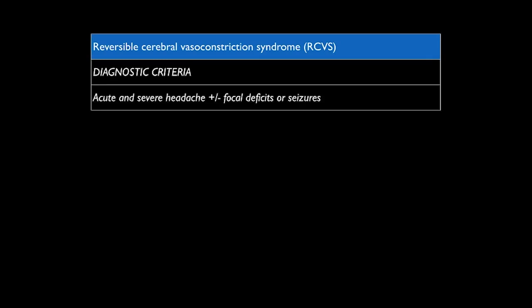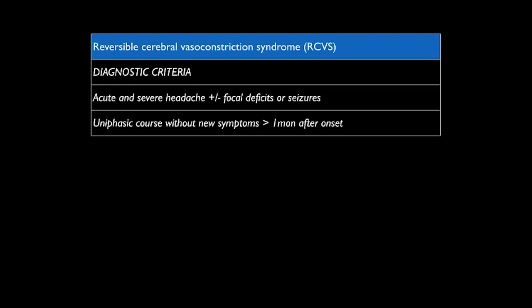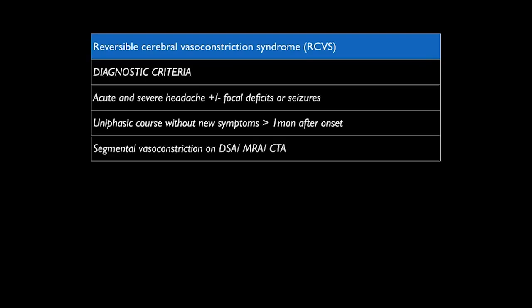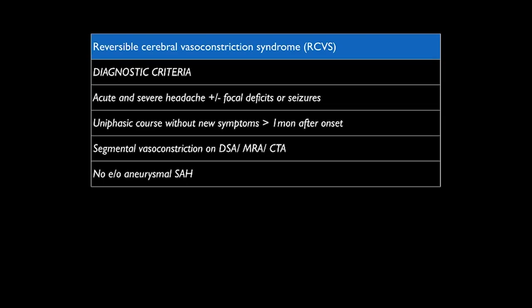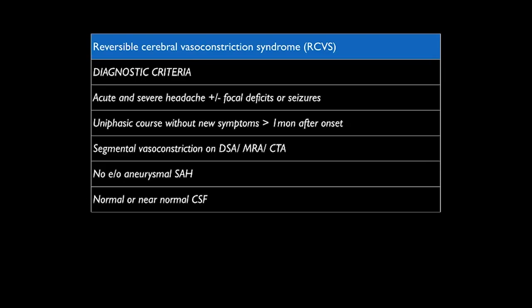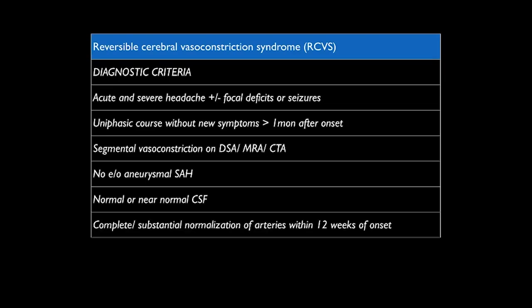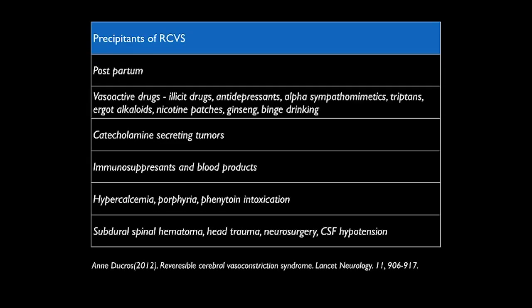The diagnostic criteria for RCVS, proposed by Ann Ducros, involves acute severe headache with or without focal deficit and seizures, a uniphasic course, and typical segmental vasoconstriction on DSA, MR angio, or CT angiogram — though an intracranial aneurysm must still be ruled out. Normal or near-normal CSF is important to differentiate from the acute phase of vasculitis, which usually shows inflammatory markers. The definitive confirming factor is complete or substantial normalization of the arteries within about 12 weeks. Multiple precipitants of RCVS exist and new ones are identified regularly.